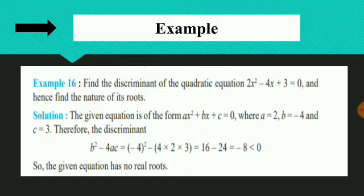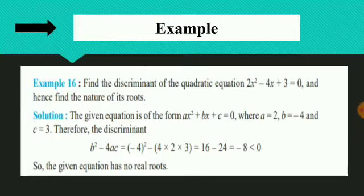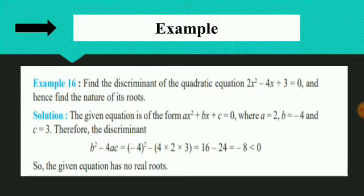Let us take up an example — Example 16. Find the discriminant of the quadratic equation 2x² - 4x + 3 = 0 and hence find the nature of its roots. Clearly, a = 2, b = -4, and c = 3. The discriminant D = b² - 4ac = 16 - 24 = -8, which is less than 0. So we will say that the equation has no real roots.